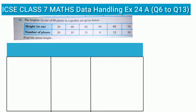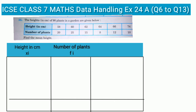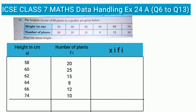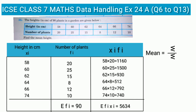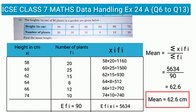Question 11 is similar to question 10: heights in centimeters of 90 plants in a garden are given. We convert the horizontal tabulated data to vertical form with columns xi (height in cm), fi (number of plants), and xi×fi. Sum of fi is 90 and sum of xi×fi is 5634. Applying the formula, mean = 5634 / 90 = 62.6 centimeters.